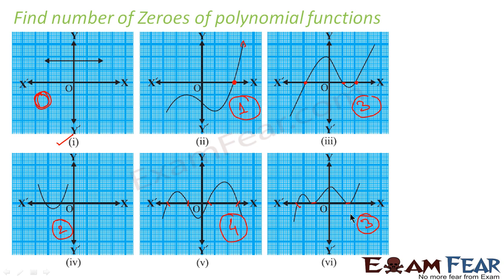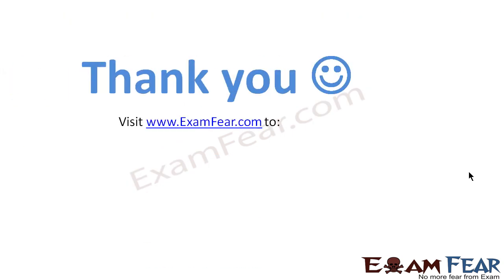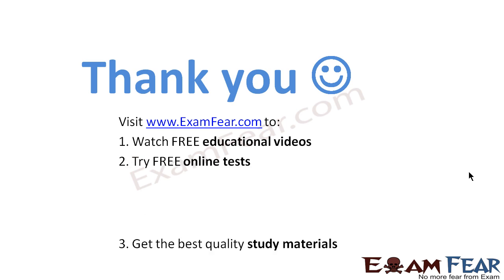So what we have to do is simply count the number of points where the graph meets the x-axis. That graph meeting at four points means the number of zeros is 4. Meeting at three points means zeros = 3. Never meeting the x-axis means zeros = 0.